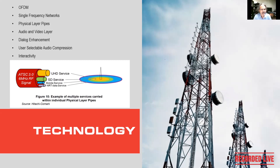There's also user-selectable audio dynamic range compression. If you have a home theater with 10.1 surround sound, you could select no dynamic range compression at all and get full bandwidth audio. If you have a TV with just a sound bar, you might want a little higher dynamic range compression to make the dialogue pop out more. And at the bottom end of the scale, if you're watching on a tablet, you'd want a high level of audio compression to make the dialogue easier to understand.